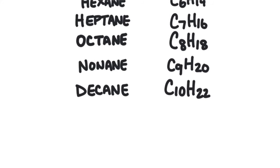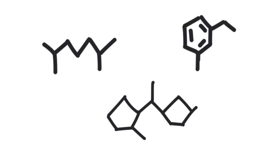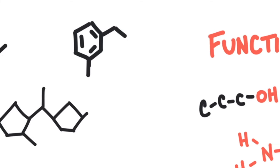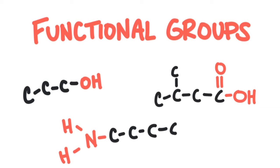Sometimes a hydrocarbon might have branches or rings, or sometimes there may even be double bonds between carbons. Carbon chains come in all shapes and sizes, but the function and properties of organic molecules do not depend on the shape and size of the carbon chain alone. Functional groups are unique groups of atoms that are bonded to the carbon chain, and they are the parts of organic molecules that participate in chemical reactions and explain the properties of those molecules.